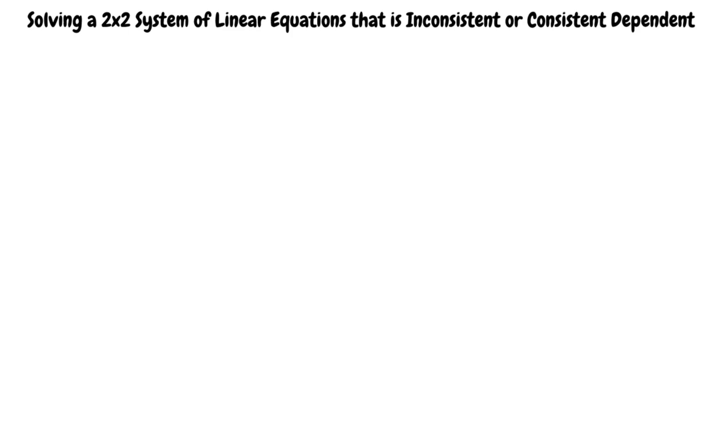This video will cover the topic of solving a 2x2 system of linear equations that is inconsistent or consistent dependent. A 2x2 system of linear equations has three possible solutions: no solution, one solution, or infinitely many solutions.